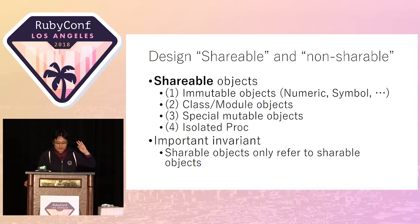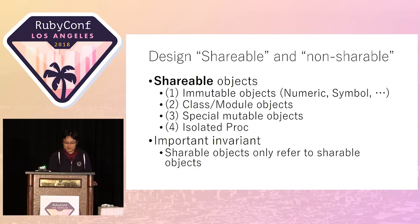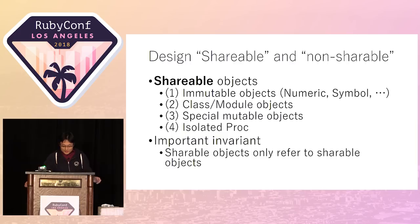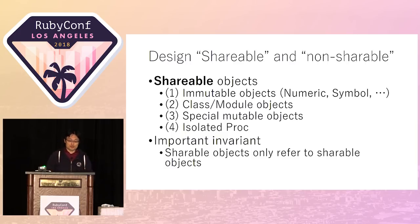The four types of shareable objects are: immutable objects, class and module objects, special mutable objects, and isolated proc objects. The important assumption is that shareable objects only refer to other shareable objects. If a shareable object points to a non-shareable object, we could accidentally share a non-shareable object between Guilds — so we need to keep this assumption.